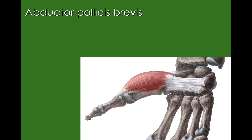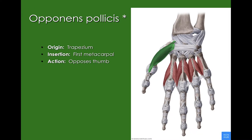We have abductor pollicis brevis, which is going to abduct our thumb. Then we have opponens pollicis. This muscle originates on the trapezium, inserts to the first metacarpal, and it's going to oppose our thumb. Here's that review and reinforce slide — pause your video and take some time to work through some of those muscles.